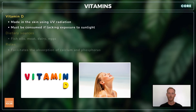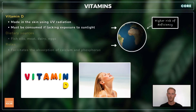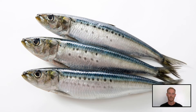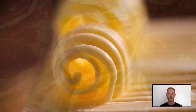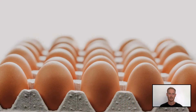Vitamin D is the only vitamin that the body can synthesize, and this occurs in the skin using UV radiation from sunlight. However, people who live a significant distance north or south of the equator are deprived of sunlight for much of the year, and may become deficient unless they consume the vitamin in the form of foods like oily fish, red meat, butter, milk, cheese, and eggs.